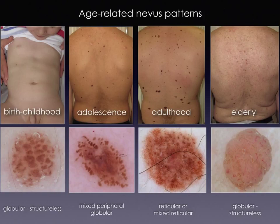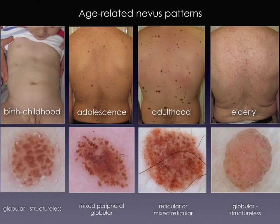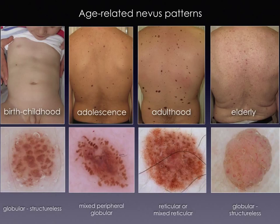Studies investigating the age-related nevus pattern showed significant differences in the nevus pattern according to different age groups. While nevi in children commonly exhibit a globular pattern, nevi in adolescents are often characterized by a peripheral rim of brown globules. These nevi enlarge symmetrically over time until the disappearance of brown globules indicates stabilization of growth. At this stage, they often exhibit a reticular pattern, as also typically seen in nevi of adults.